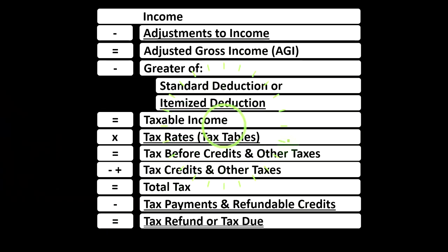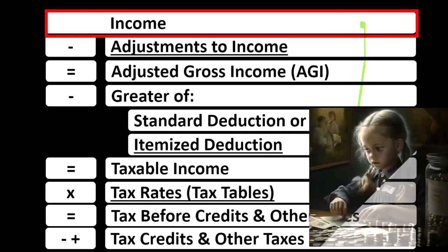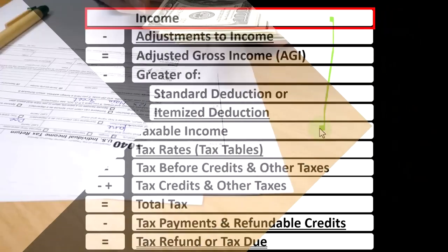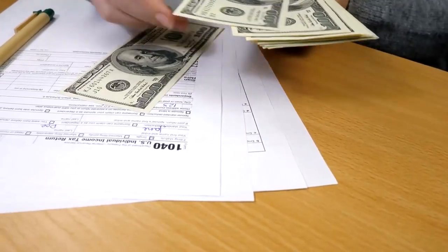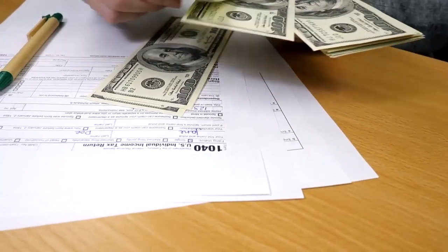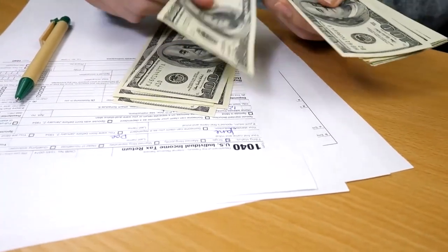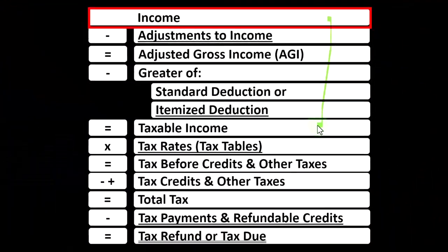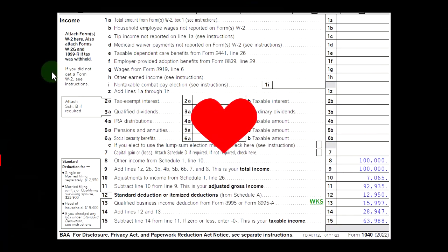Looking at the income tax formula, we're focused on line one income. The first half of the income tax formula is in essence an income statement — just an outline, a scaffolding, with other forms and schedules flowing into these line items. One of those is the Schedule C business income, which is in essence an income statement with business income minus business expenses. The net business income rolls into line one of the income tax formula, page one of the 1040.